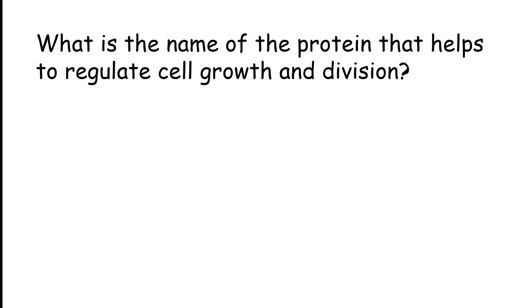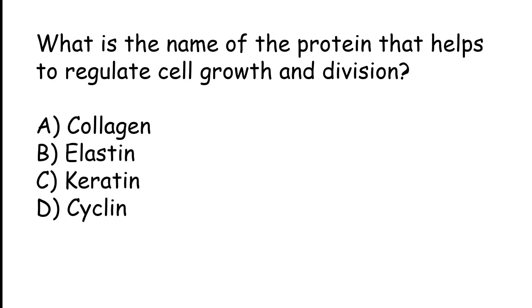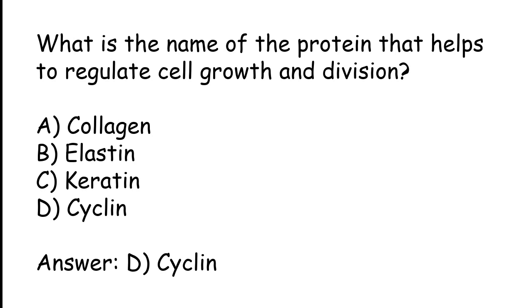What is the name of the protein that helps to regulate cell growth and division? Options: collagen, elastin, keratin, cyclin. The correct answer is option D: cyclin is the name of the protein that helps to regulate cell growth and division.